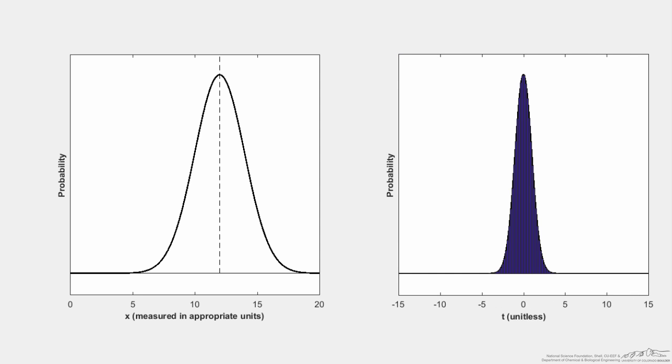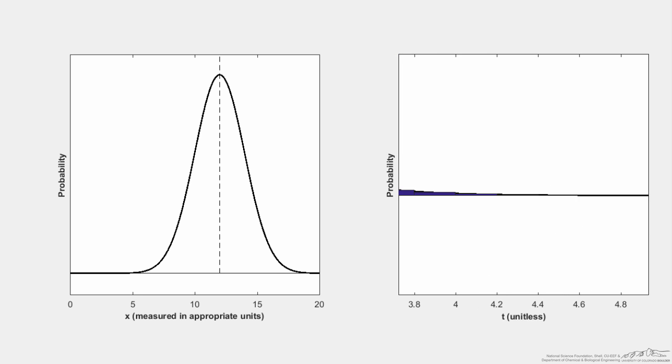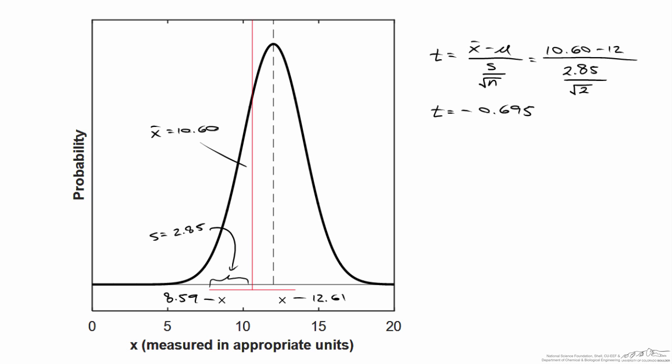Zooming in on the refined simulation with a million replications, I see a very good representation of a t-distribution with ninety-nine degrees of freedom, even way out in the tails. The take-away message is that the ratio — sample mean minus population mean, divided by the sample standard deviation divided by the square root of sample size — is t-distributed, and that has important consequences for other areas of statistics.